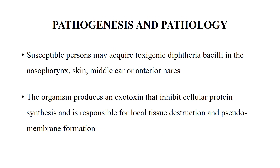Pathogenesis and pathology. Susceptible persons usually acquire the toxigenic diphtheria bacilli in the nasopharynx, skin, or the middle ear via the Eustachian tube or nose. The organism produces an exotoxin which inhibits cellular protein synthesis and is responsible for local tissue destruction and the formation of the pseudomembrane, which is pathognomonic for diphtheria. Some persons are carriers, meaning they harbor the bacteria in their throat but have no symptoms.